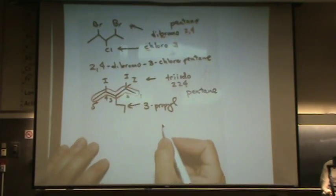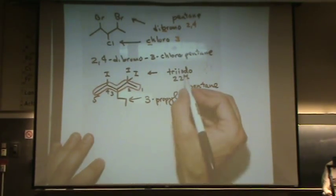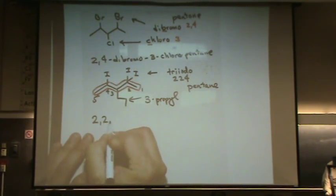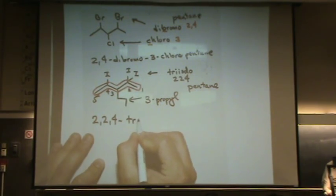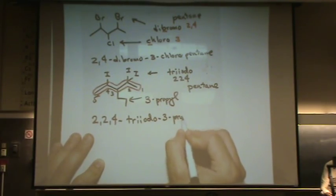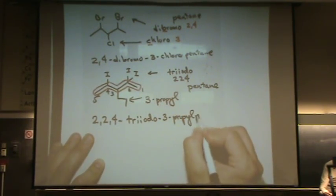So, let's put that all together. This is, an i comes before p, so it's 2, 2, 4, tri-iodo-3-propyl-pentane.